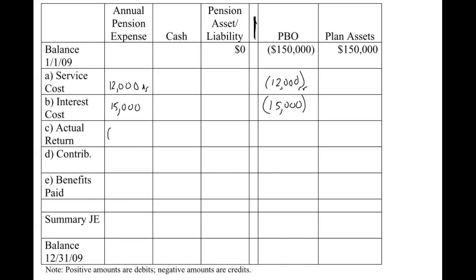Actual return of $15,000 reduces pension expense — credit in the pension expense column — and increases the value of plan assets — debit in that column. Contributions are us funding the plan: decreases cash and increases plan assets with the trustee. Benefits paid decreases the obligation with a debit to the PBO, and also decreases plan assets. Notice that benefits paid is the only item that doesn't affect the summary journal entry side — it only affects the PBO and plan assets columns.